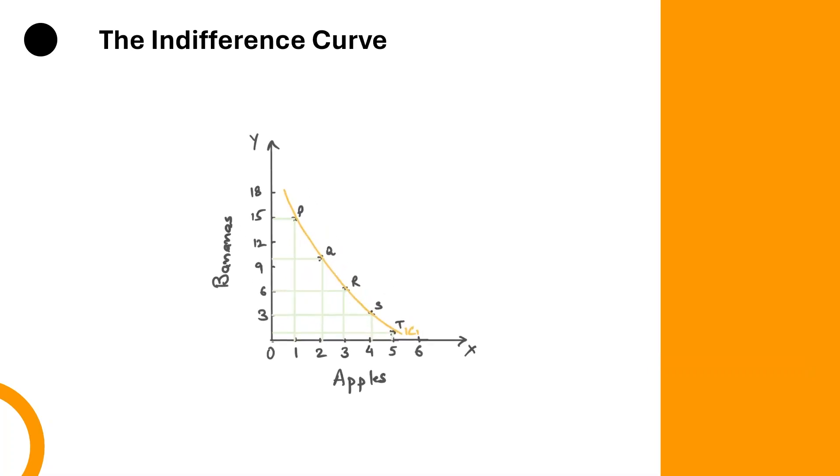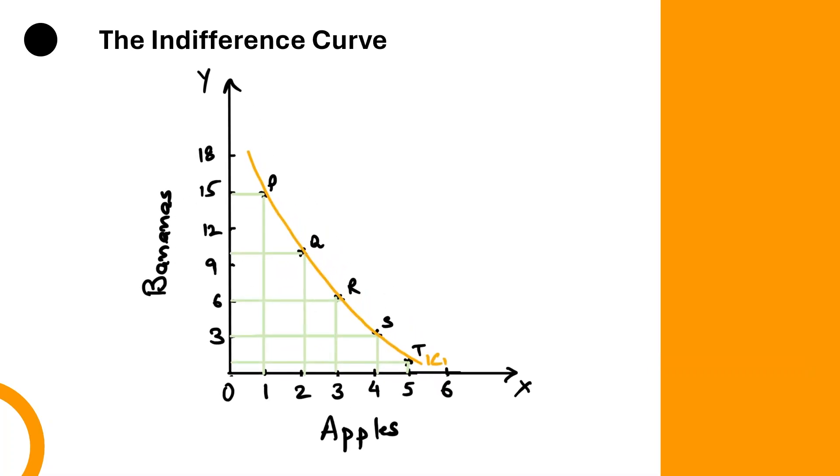Once we plot the combinations of apples and bananas from the indifference schedule, we get a smoother downward sloping curve called the indifference curve. On this curve, all the combinations P, Q, R, S, T provide equal satisfaction to the consumer.